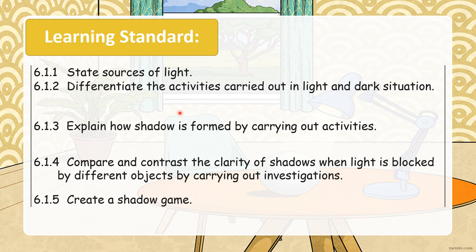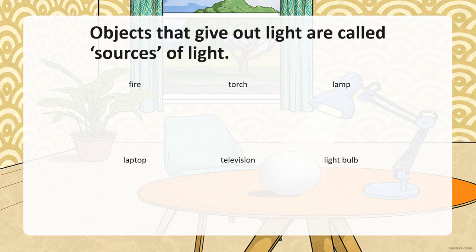We have learned all of this in our previous lessons. So let's go through once again and revise. The first one is the sources of light. Objects that give out light are called sources of light.